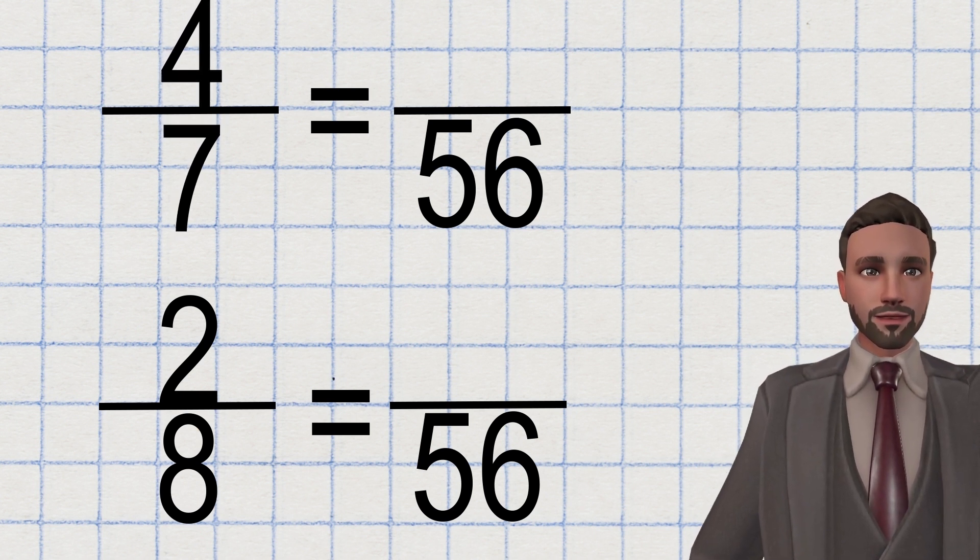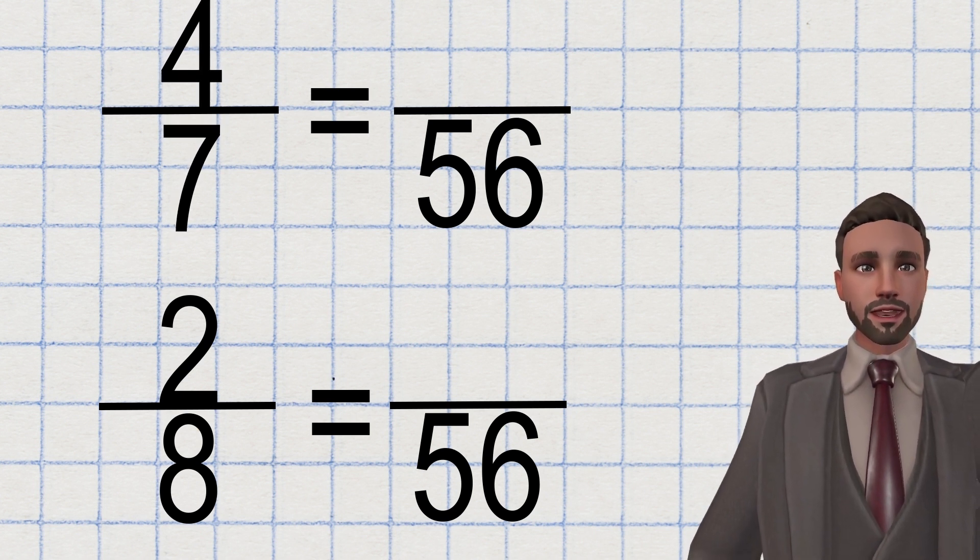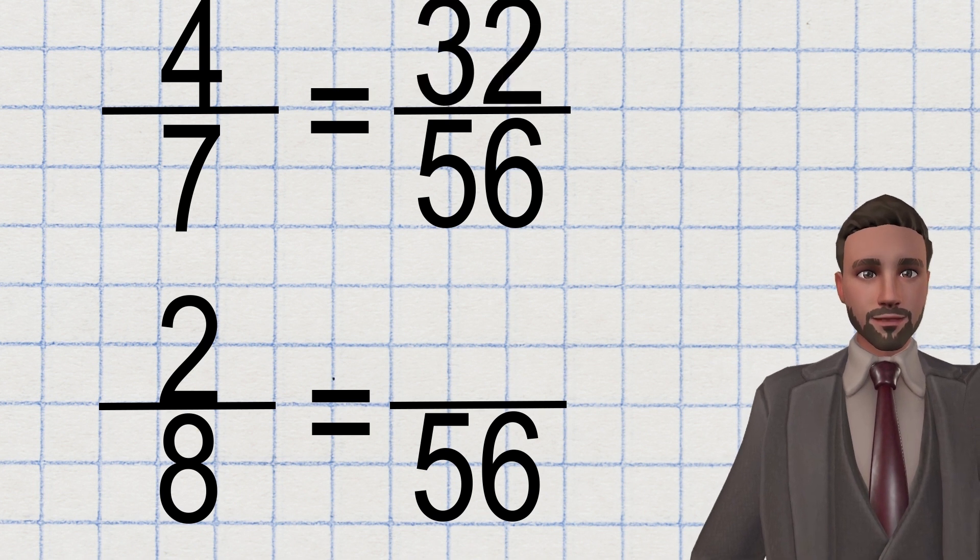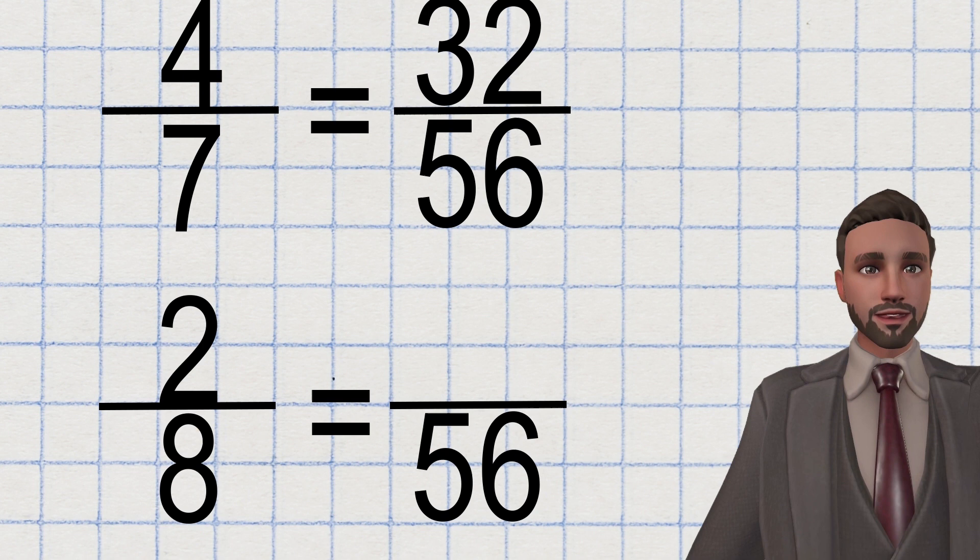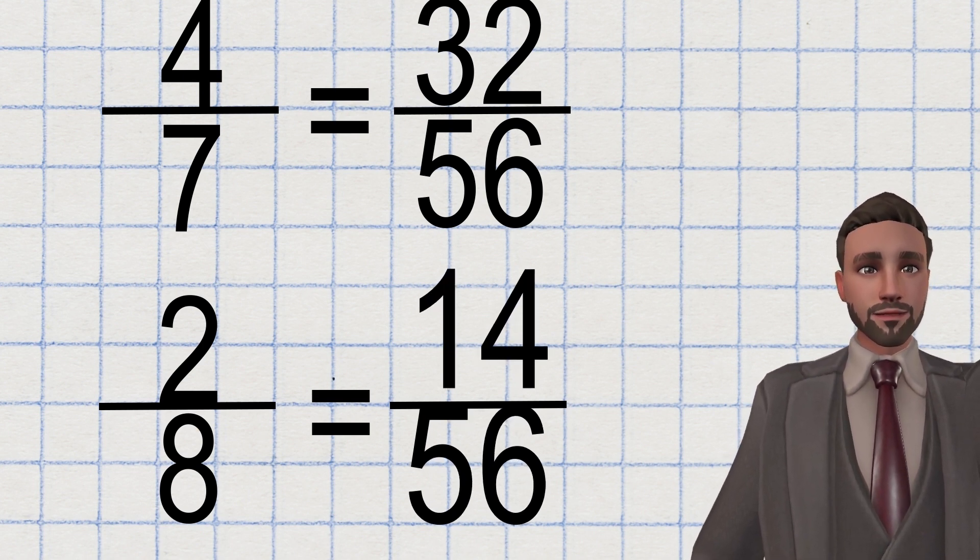So four sevenths, seven times eight makes 56. So four times eight is 32, 32 over 56. Two eighths, eight times seven is 56. So two times seven is 14, 14 over 56.